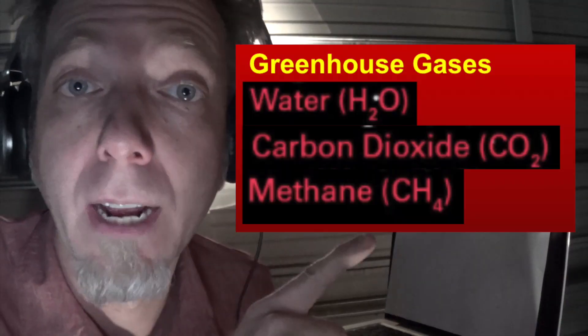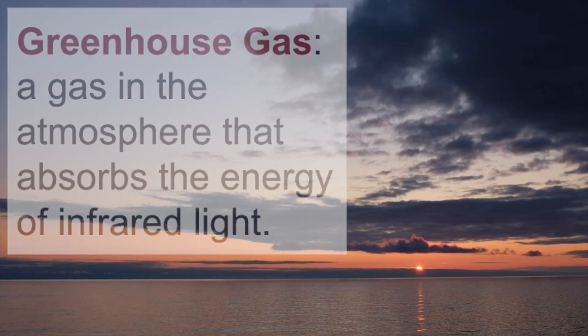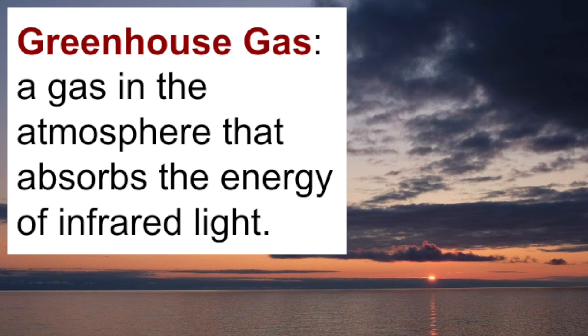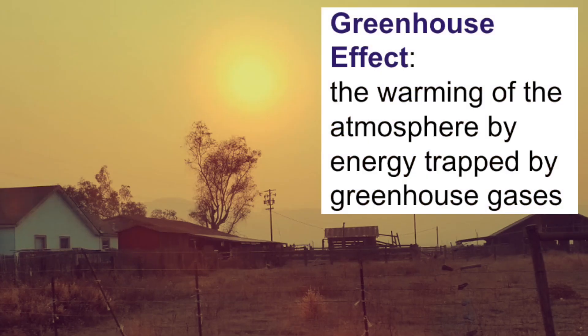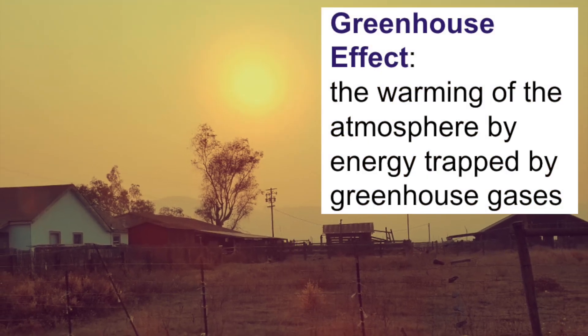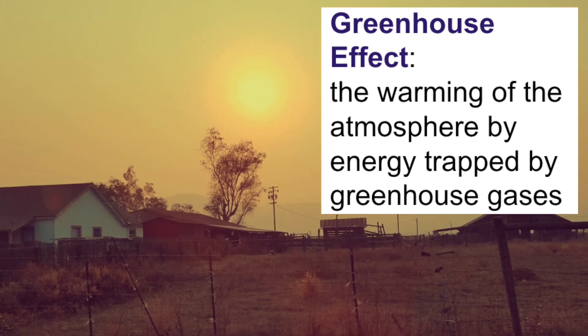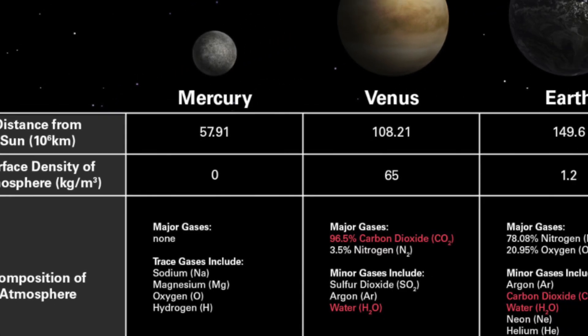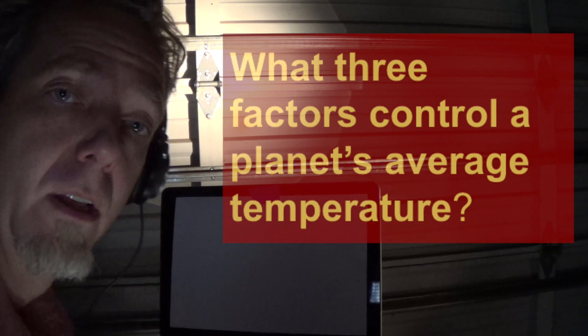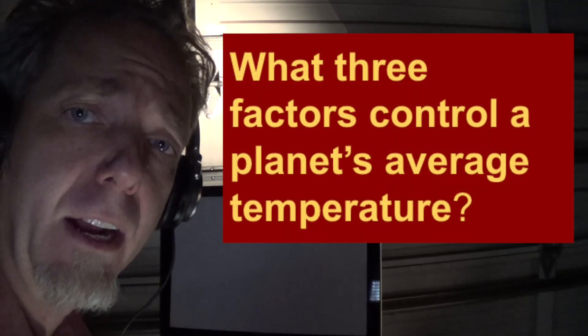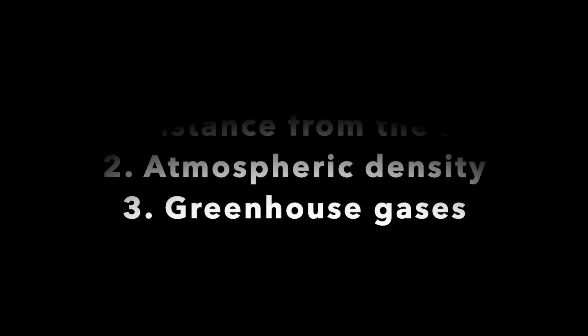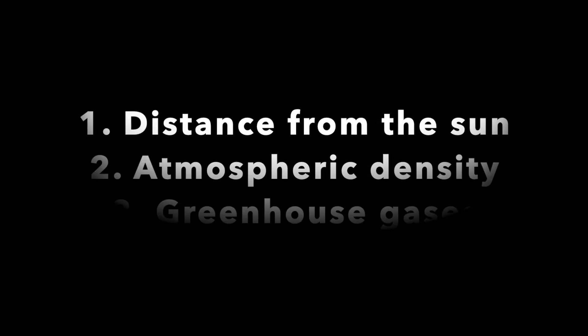Both Venus and Mars have greenhouse gases — so why aren't they both greenhouse hot? Notice that some of these gases are greenhouse gases. A greenhouse gas is a gas in the atmosphere that absorbs the energy of infrared light. The greenhouse effect is the warming of the atmosphere by energy that's trapped in greenhouse gases. Now let's review all of the data we've acquired so far. What are the three factors that actually control a planet's temperature? Distance from the sun, atmospheric density, and greenhouse gases.